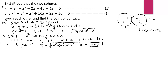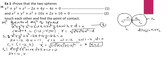Now for the second sphere S2: x² + y² + z² + 10x + 2z + 10 = 0. Comparing with the general equation: the coefficient of x is 2u = 10, so u = 5. The y term is absent, so v = 0. The coefficient of z is 2w = 2, so w = 1.